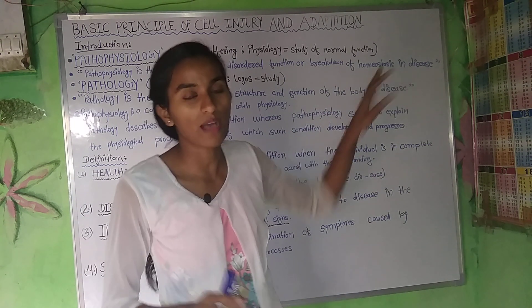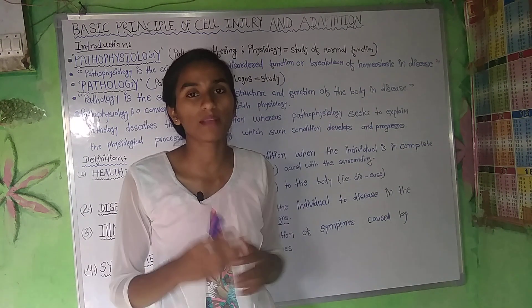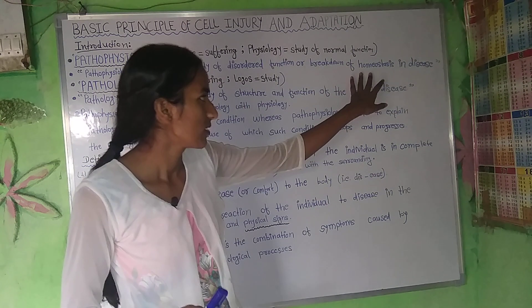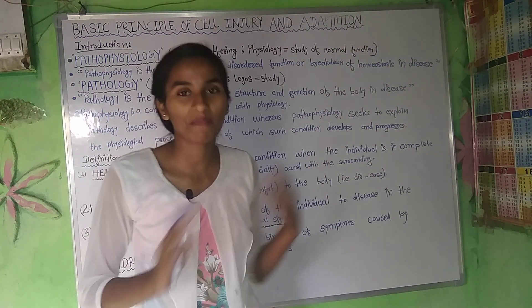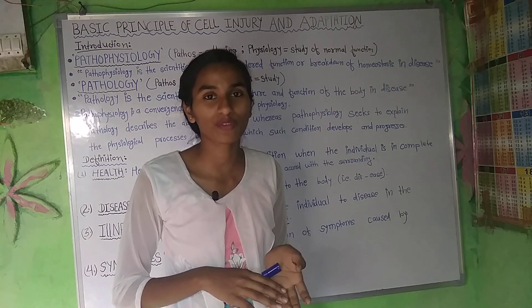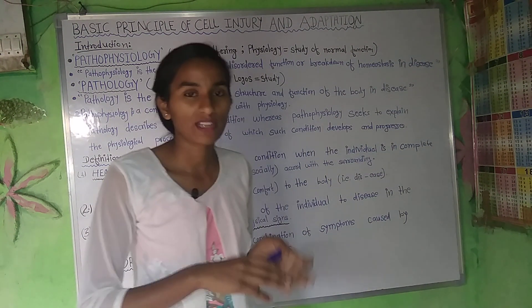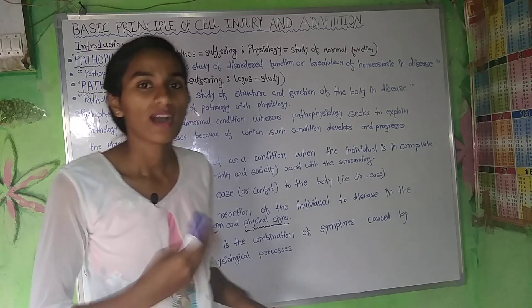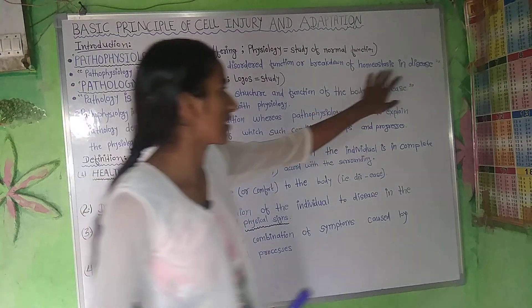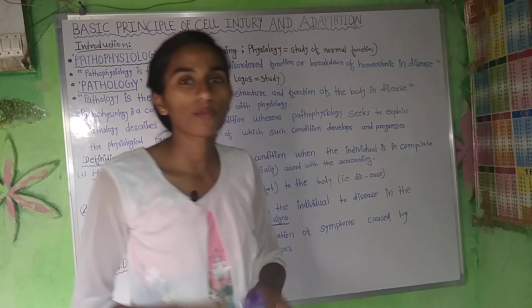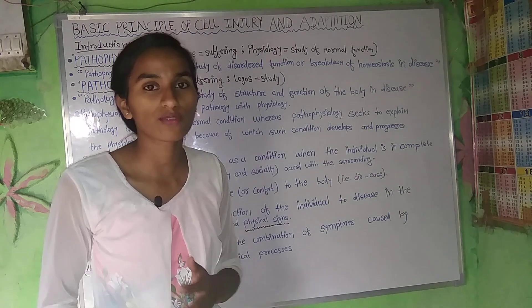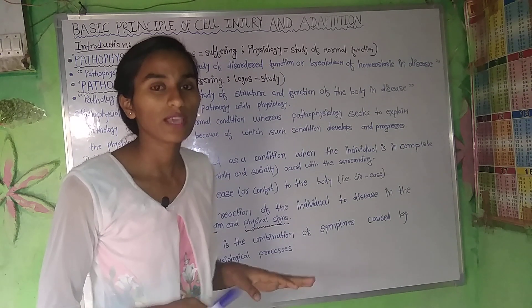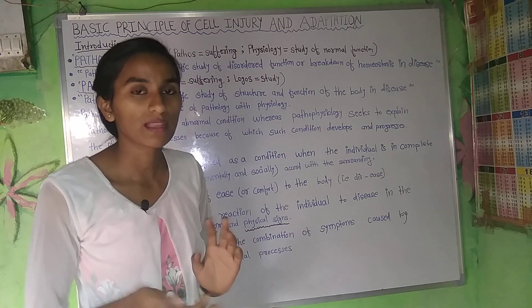Homeostasis is the capacity of the body to maintain its internal balance. I will make another video on this topic as I have covered it in the first semester, but I will also cover it here in pathophysiology. In disease conditions, there is an imbalance in the homeostatic condition, which is why the physiology of the body becomes imbalanced — it becomes different from normal.